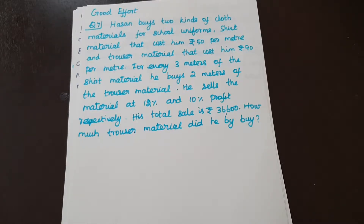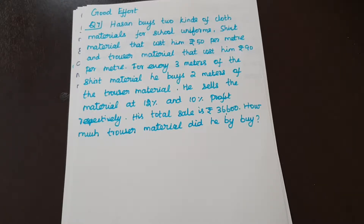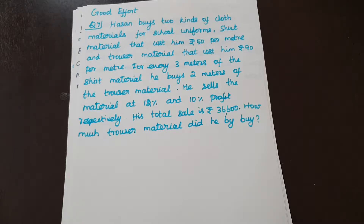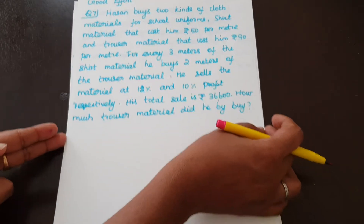Question number 7. Hassan buys 2 kinds of cloth materials for school uniforms. Shirt material costs him Rs. 50 per meter and trouser material costs Rs. 90 per meter. For every 3 meters of shirt material, he buys 2 meters of trouser material. He sells the material at 12% and 10% profit respectively. His total sale is Rs. 36,600. How much trouser material did he buy?